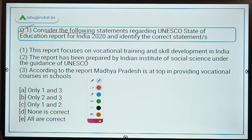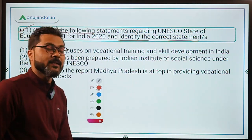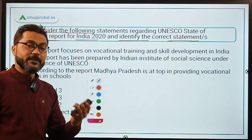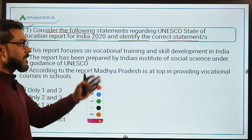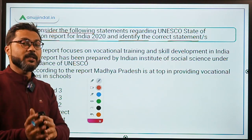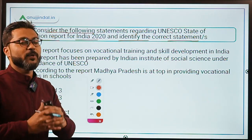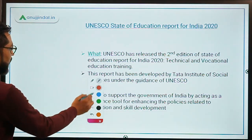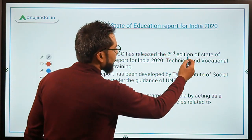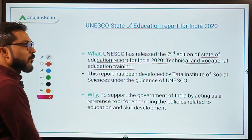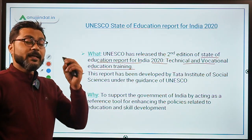Let's begin with the first question: consider the following statements regarding the UNESCO State of Education Report for India 2020 and identify the correct statement. This new report from UNESCO focuses on vocational education and training, with an emphasis on skill development. The full title is 'State of Education Report for India 2020: Technical and Vocational Education and Training.'